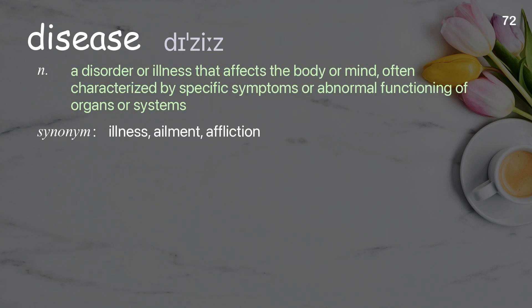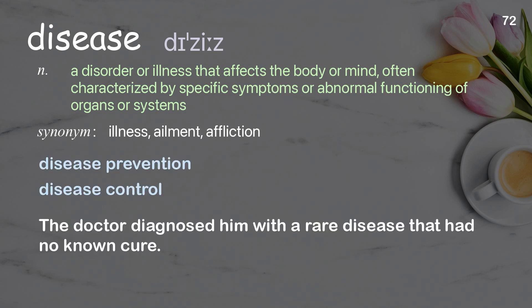Disease: A disorder or illness that affects the body or mind, often characterized by specific symptoms or abnormal functioning of organs or systems. Examples: Disease Prevention, Disease Control. The doctor diagnosed him with a rare disease that had no known cure.